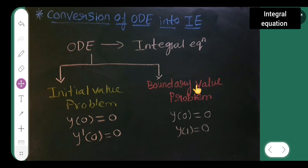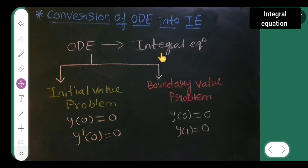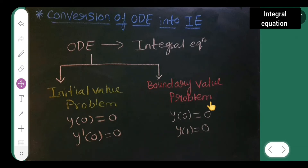The basics are important. We are looking at the conversion of an ordinary differential equation into an integral equation. Ordinary differential equations are of two types: initial value problems and boundary value problems. For an initial value problem, the conditions are at the same point — for example, y(0) = 0 and y'(0) = 0. For a boundary value problem, the points are different — for example, y(0) = 0 and y(1) = 0.